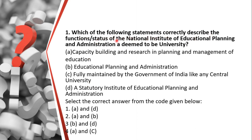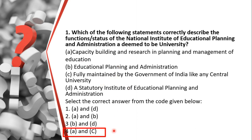Let's start from December 2018. The first question: which of the following statements correctly describe the functions and status of the National Institute of Educational Planning and Administration, a deemed-to-be university? Options include: capacity building and research in planning and management of education; fully maintained by the Government of India like any central university; statutory institute; and others. Using the elimination method, since it is a deemed-to-be university and not statutory, option D is eliminated.